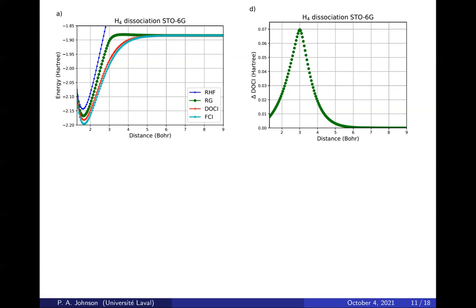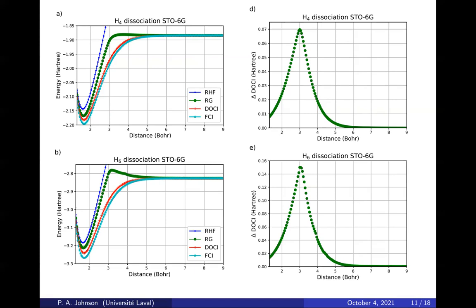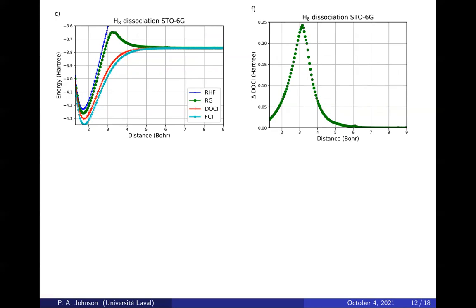As we go to bigger systems, this avoided crossing gets worse. So for H6, same behavior except the avoided crossing is worse. And for H8, it's the same but worse. So for all of these systems, we will have to look at more than one RG state, or we will have to do some other things that we won't describe at all. Suffice it to say that in the next week or two, we will submit a preprint where we have much better curves.